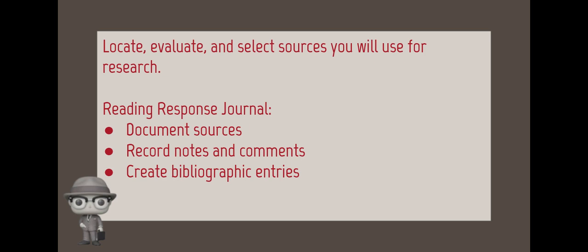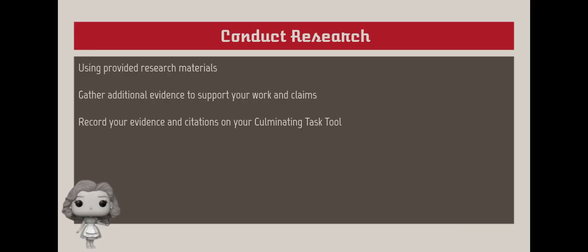Remember you need to evaluate the sources for their usefulness. Using the provided research materials, you will conduct research to gather additional evidence to support the supporting claims for your work. You will record your evidence and the appropriate citations on the Culminating Task Tool. You will have 30 minutes to locate your sources, locate additional sources beyond the unit text, and conduct your research and take notes.